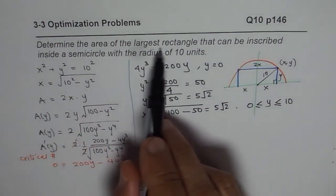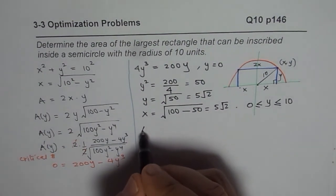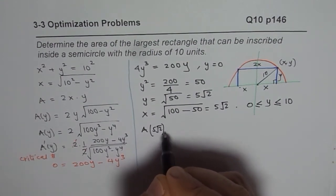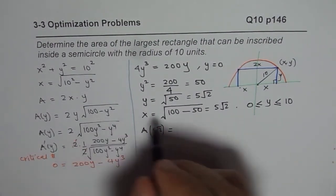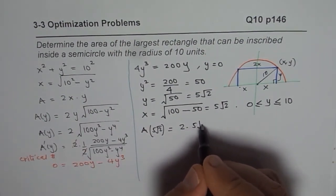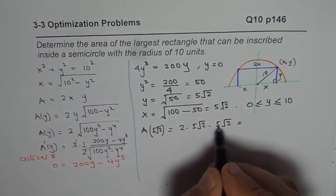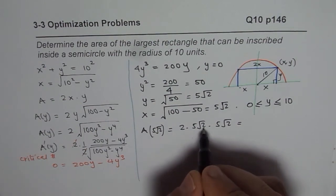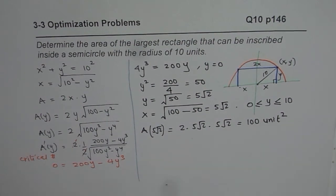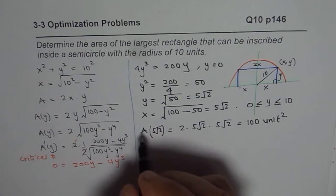Now we need to determine the area of the largest rectangle. So area for y equals to 5 square root 2, let's calculate this area, is equals to 2 times x times y. So times 5 square root 2 times 5 square root 2. So 5 times 5 is 25, times 2 is 50, 50 times 2 is 100. So we get 100 unit square.